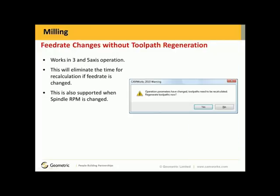Feed rate changes without toolpath regeneration. This is awesome. It works in 3-axis and 5-axis operations, and what it does is eliminate the time for toolpath recalculation if you've changed the feed rate. But not only the feed rate — it also applies to the spindle RPM as well. This is a great time saver.